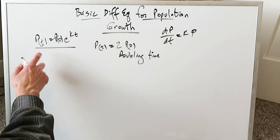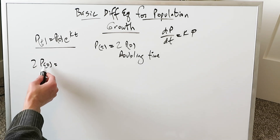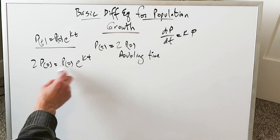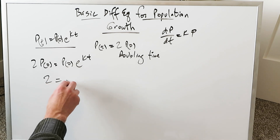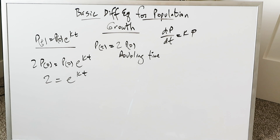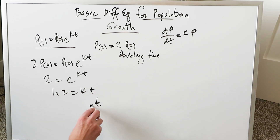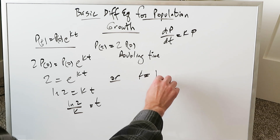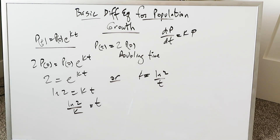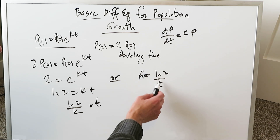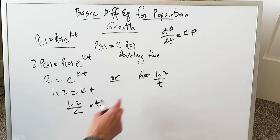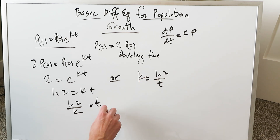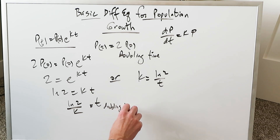Setting p(t) = 2p(0), we get 2p(0) = p(0)·e^(kt). The p(0) cancels, leaving 2 = e^(kt). Applying natural logs: ln(2) = kt, so t = ln(2)/k. Alternatively, k = ln(2)/t. Given the doubling time, you can calculate the rate constant as k = ln(2) divided by that doubling time; and given k, you can determine the doubling time.